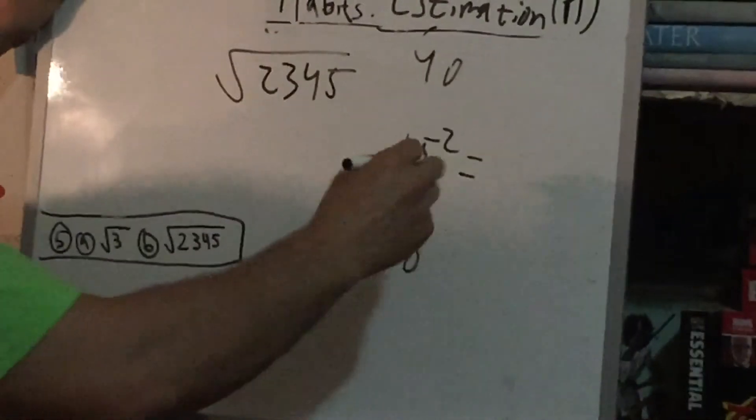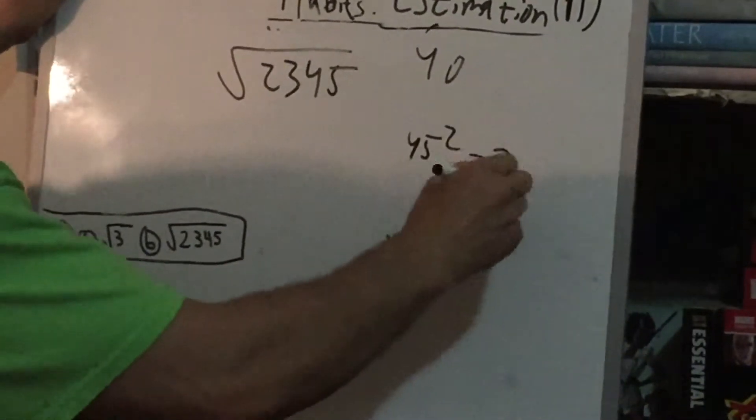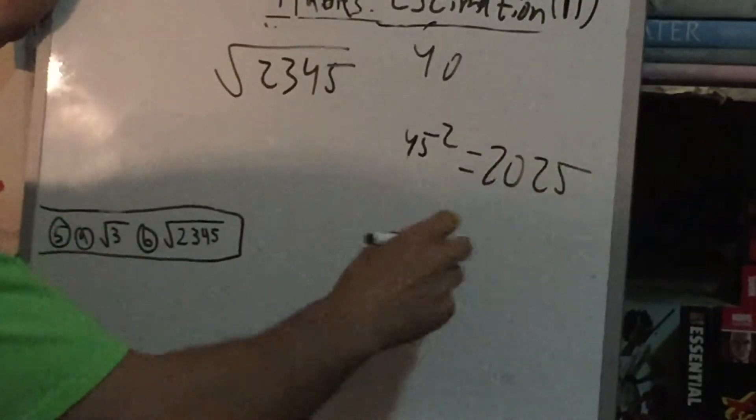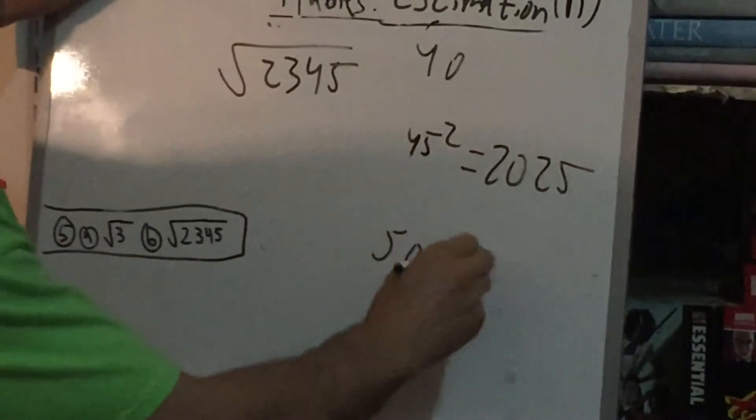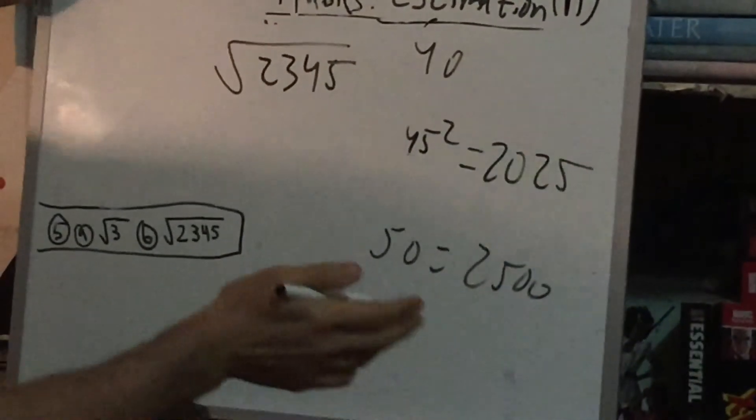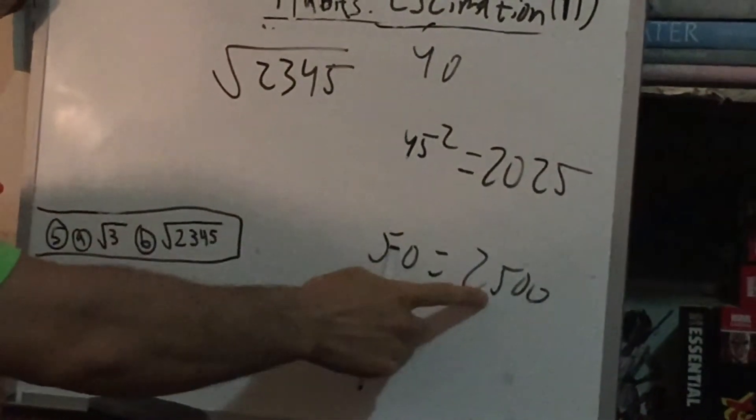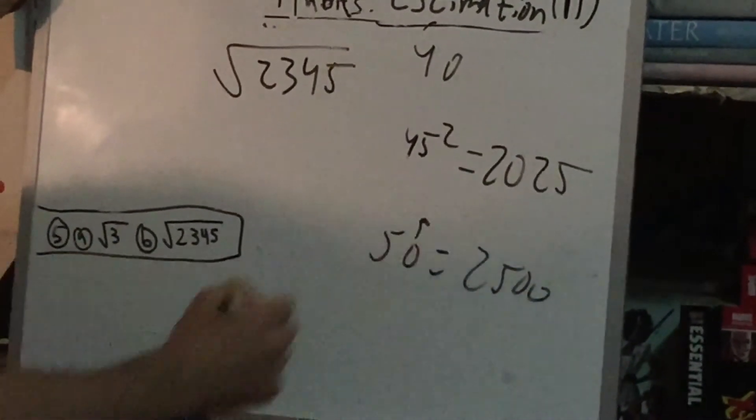So 45 squared. That's trick 2, remember? So it's 4 times 5, 20. And 5 times 5, 25. Now, at this point, we could tell this is going to be closer to the 2,500, so maybe we want to start going backwards.